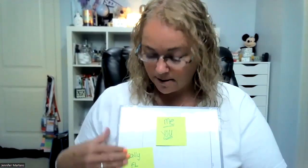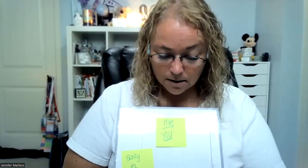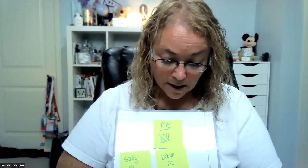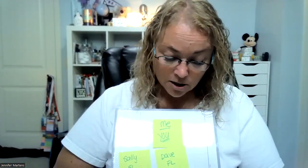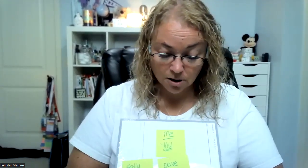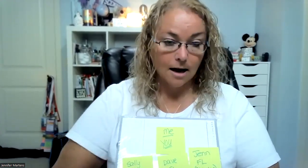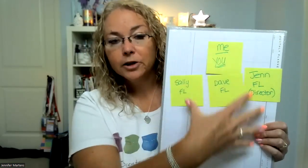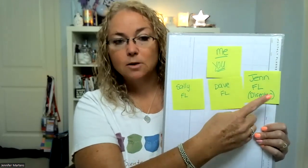Let me show you visually. Here's you with three frontline — here's Sally, she's a frontline; here's Dave, he's a frontline; and here's Jen, she's a frontline but she's also a director who has met the director requirements. So you have three frontline, but this one happens to be a director. These two are your team because there's no director between you and them. That's your team; all three are your group. Once you hit director, you bump out and you're your own team — every director is their own team.